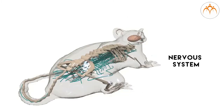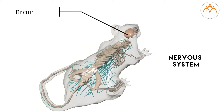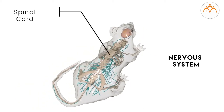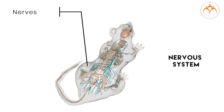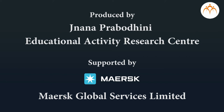The brain is an important part of the nervous system. The nervous system of the rat consists of the brain, spinal cord, and neurons. The brain is located in the head region of the animal. In rats, the brain performs important functions like balance, coordination, vision, and smell.